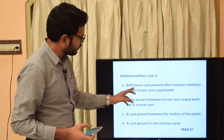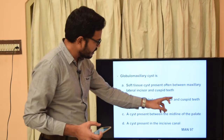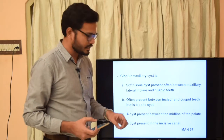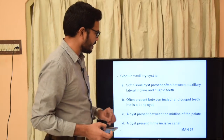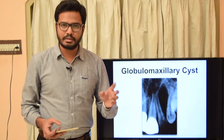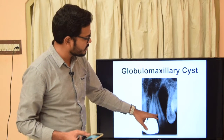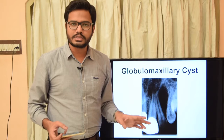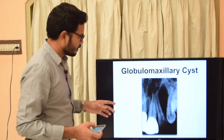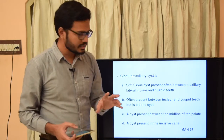The options are: option A - soft tissue cyst present often between maxillary lateral incisor and cuspid teeth; option B - often present between incisor and cuspid teeth but is a bone cyst; option C - a cyst present between the midline of the palate; option D - a cyst present in the incisor canal. A globulomaxillary cyst is also called a premaxilla-maxillary cyst. It appears as an inverted pear-shaped radiolucency usually between maxillary lateral incisor and maxillary canine, and histologically it resembles keratocystic odontogenic tumor (OKC).